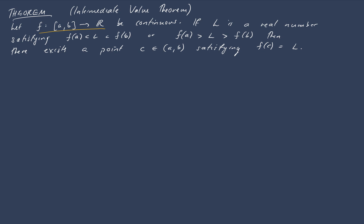So if it's continuous on a closed interval [a, b], and we have a number between f of the endpoints, then there's somewhere in the middle, c, such that f(c) is equal to that number.